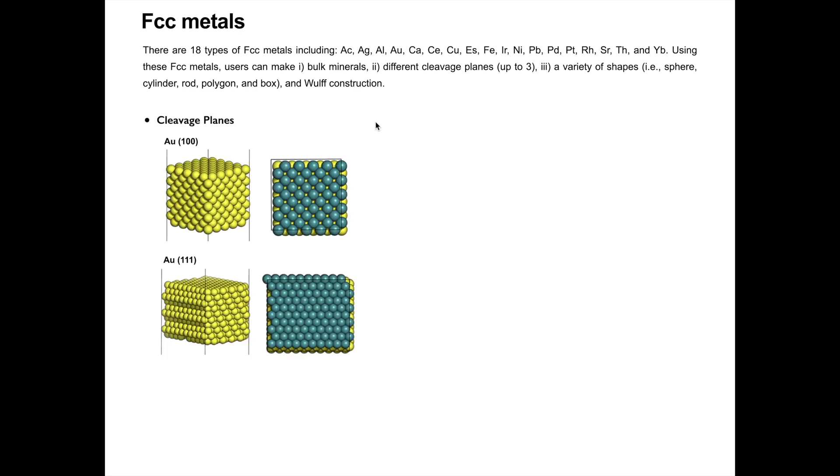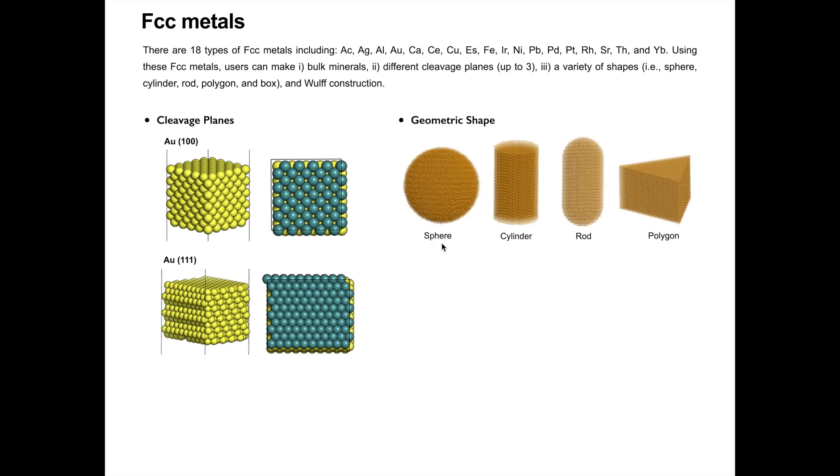Using these FCC metals, users can make bulk minerals, different cleavage surfaces with Miller indices ranging from 100 to 332 with periodicity along X, Y, and Z dimensions, and a variety of shapes such as sphere, cylinder, rod, polygon, box, and Wulff construction.